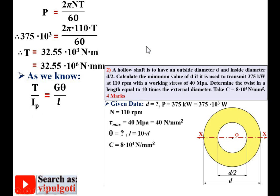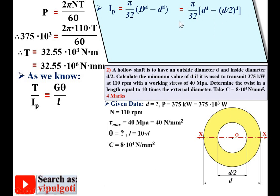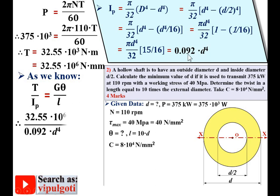The polar moment of inertia Ip is also unknown. For a hollow circular shaft: Ip = (π/32)(D⁴ − d⁴), where D is outside diameter and d is inside diameter. Here D = D (small d) and d = D/2. Substituting: Ip = (π/32)(D⁴ − (D/2)⁴) = (π/32) × D⁴ × (1 − 1/16), which simplifies to 0.092 D⁴.